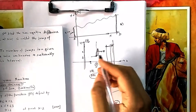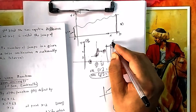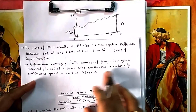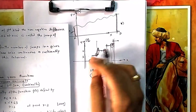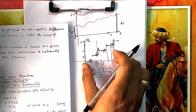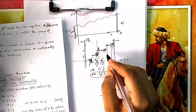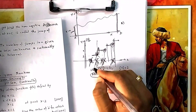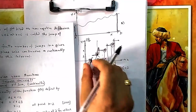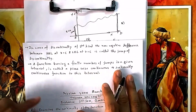If a function has a finite number of jumps — for instance, three or four discontinuous points in a given interval — then we say it is piecewise continuous or sectionally continuous. The function is discontinuous at those specific points but continuous everywhere else in the interval. So between the discontinuous points, the function is continuous, making the overall function piecewise continuous.